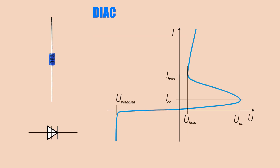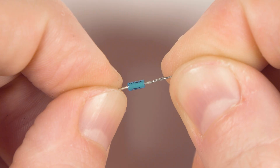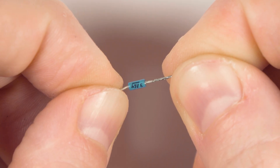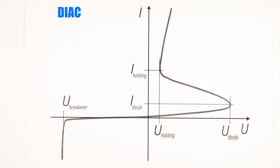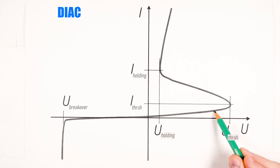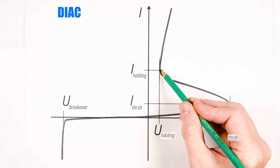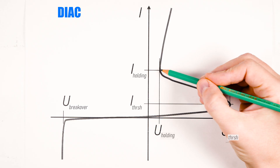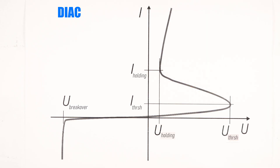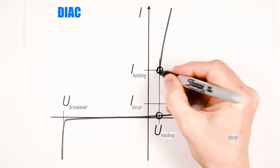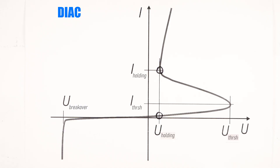This is the DIAC, also known as a two-terminal thyristor, trigger diode, or Shockley diode. If you understand how thyristors work, understanding the DIAC is easy. A DIAC has only two terminals, and instead of a gate signal, it turns on when the voltage exceeds a certain threshold called breakover voltage. Its VA characteristic has an S-shape: as we raise voltage, current increases slowly. When voltage hits the threshold, the DIAC turns on, current rises sharply, and voltage drops. When the voltage falls to the holding voltage, it stops falling while current continues to increase sharply — that means the DIAC is latched. Notice that the same voltage can correspond to two different states — conducting and non-conducting. That's called bistable behavior.